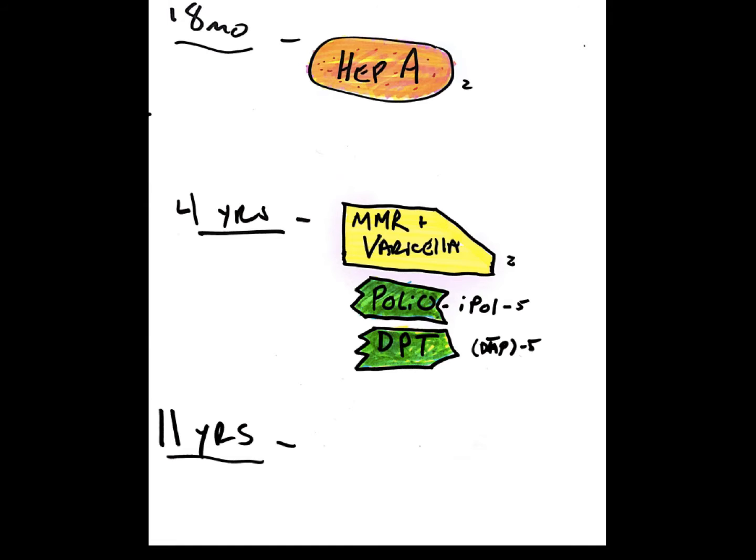So 18 months, they only get the Hep A. Now they have another two-and-a-half-year break, and then they get their four-year vaccinations. That's the second dose of MMR and varicella.